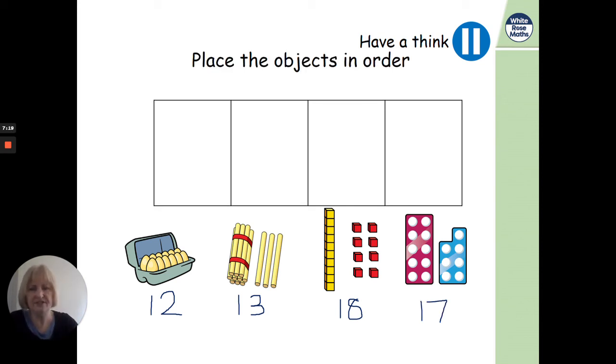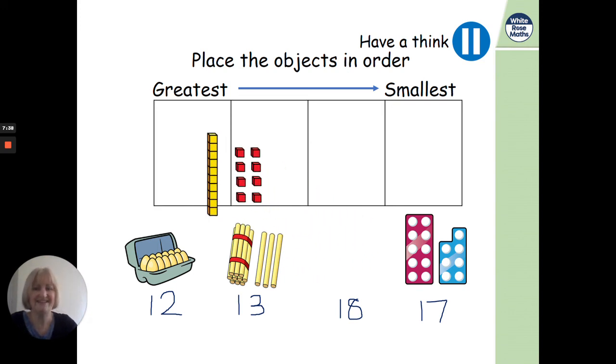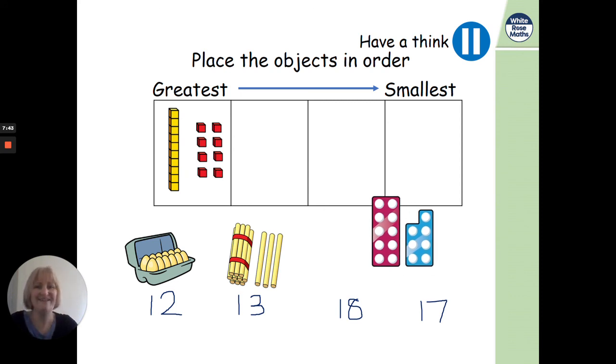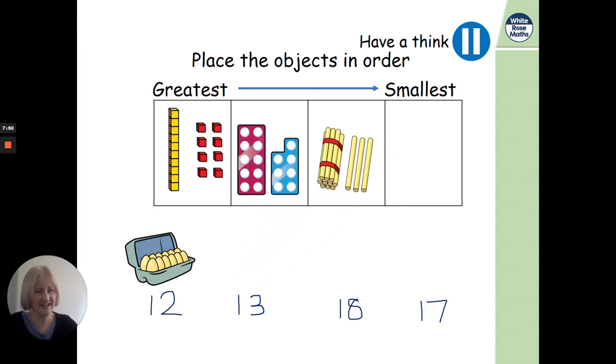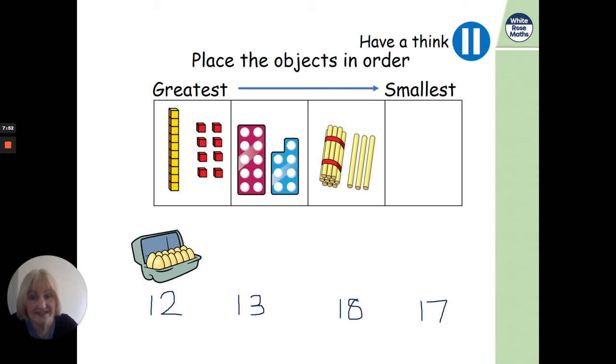Now, what do we have to do? It says, place the objects in order. Ooh, this time, from the greatest down to the smallest. So we have to start with the biggest number, which is 18. Yes. And the next biggest number was 17. And then getting a bit smaller, 13. And then the smallest, 12.